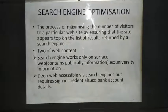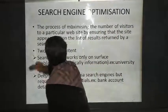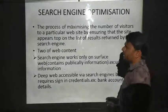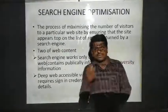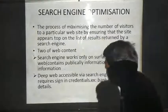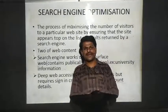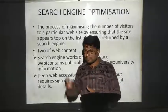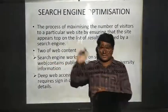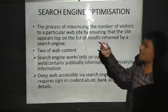Now, search engine optimization. This is the process of maximizing the number of visitors to a particular website so that the site appears at the top of the list of results returned by a search engine. The website which is accessed by the more number of users will be listed at the top. When you search for information, the most visited websites will be listed first, with decreasing visitor counts further down. This process is called search engine optimization.